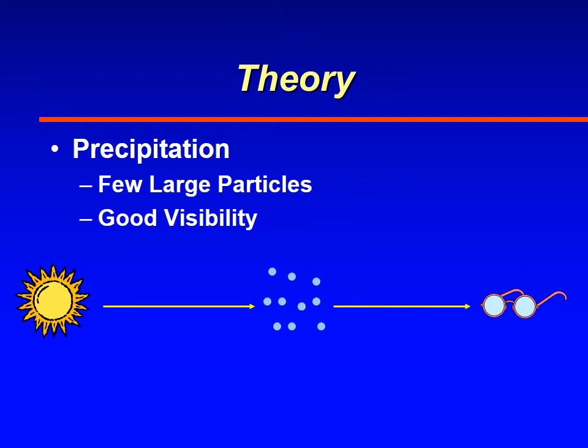Whereas objects that are really large and maybe only a few of them, like precipitation, raindrops, or big snowflakes, won't scatter the light as much and you'll have better visibility.